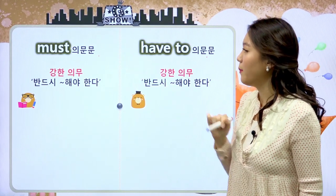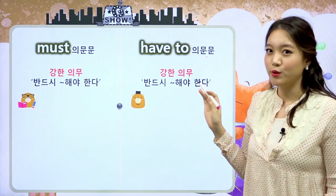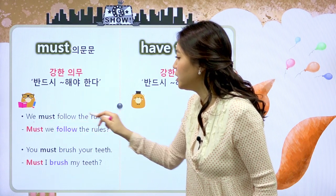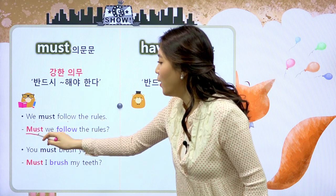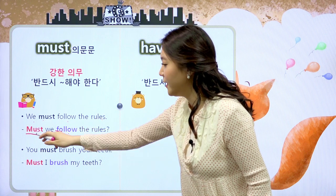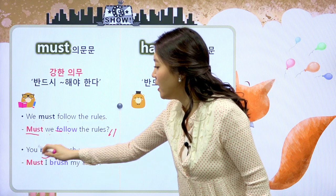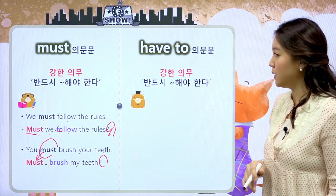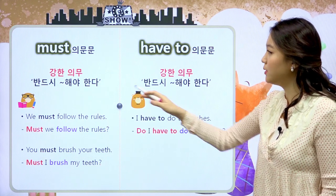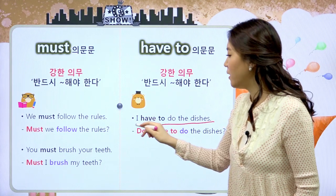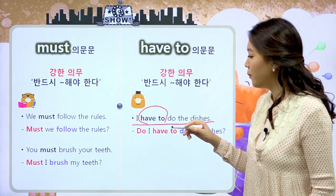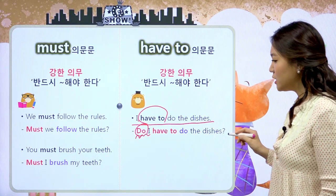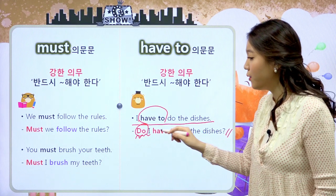의문문입니다. must 같은 경우에는 must가 주어 앞으로 나오면 되겠죠. 예를 들면 'We must follow the rules' → 'Must we follow the rules?' 하면 우리가 그 규칙을 지켜야만 하나요? 'You must brush your teeth' → 'Must you brush your teeth?' 하면 제가 양치를 해야만 하나요? have to 의문문은 일반 동사처럼 do가 앞으로 나와요. 'I have to do the dishes' → 'Do I have to do the dishes?' 그럼 제가 설거지를 해야만 하나요?